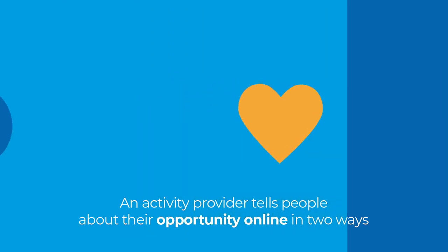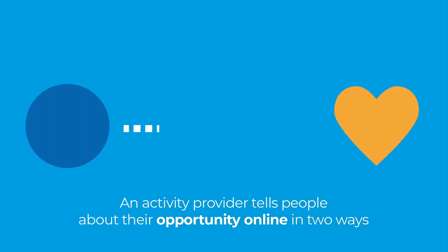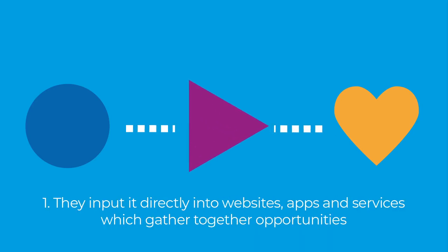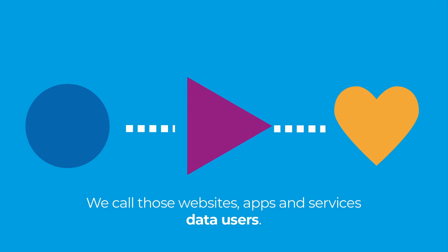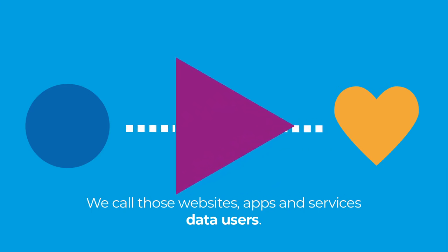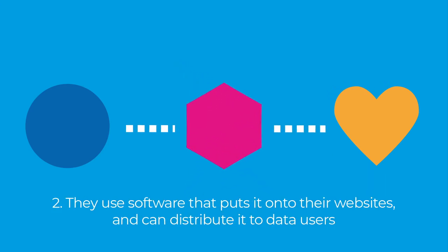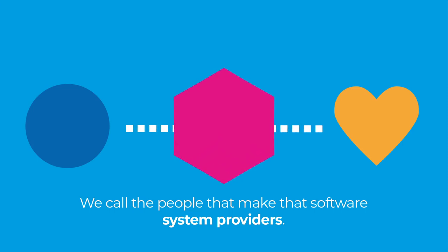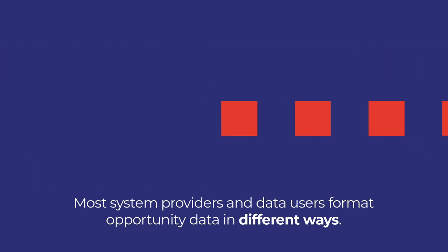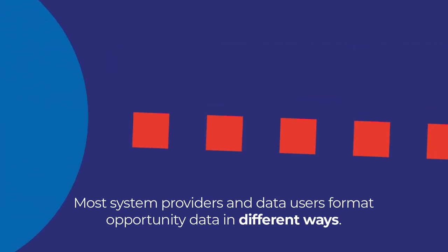At the moment, an activity provider can tell people about an opportunity online in two ways. They can input it into useful websites, apps and services which gather opportunities together in one place for people to see — we call those data users. They can also input it into a clever bit of software that distributes it to useful websites, apps and services. We call the people that make that clever bit of software system providers.